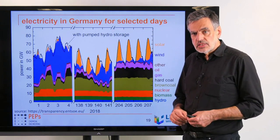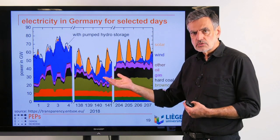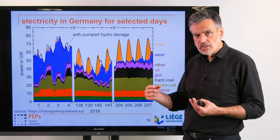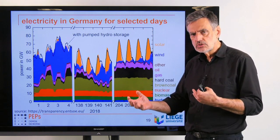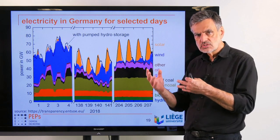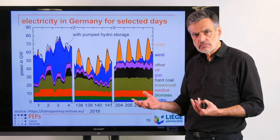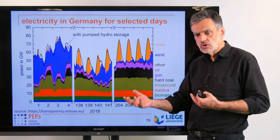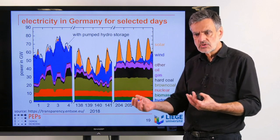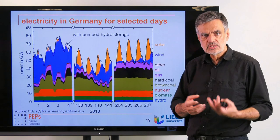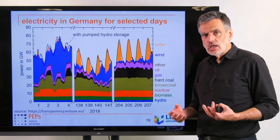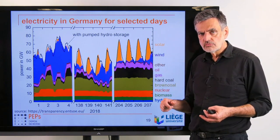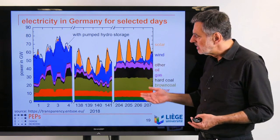There may be several reasons for the EU leveling off. One reason can be explained by looking at the electrical power supplied on different days in 2018: renewable energies — wind and solar — are strongly fluctuating. Solar only during daytime, wind varying significantly. When there is high renewable supply, even nuclear power plants are down-regulated significantly.